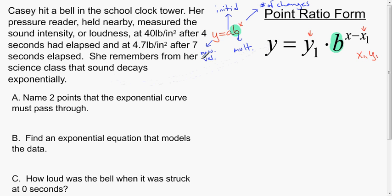This brings us to the first question where it says name two points that the exponential curve must pass through. Anytime we deal with two points it's a great time for point ratio form, and also an indicator is that you don't know the initial value.